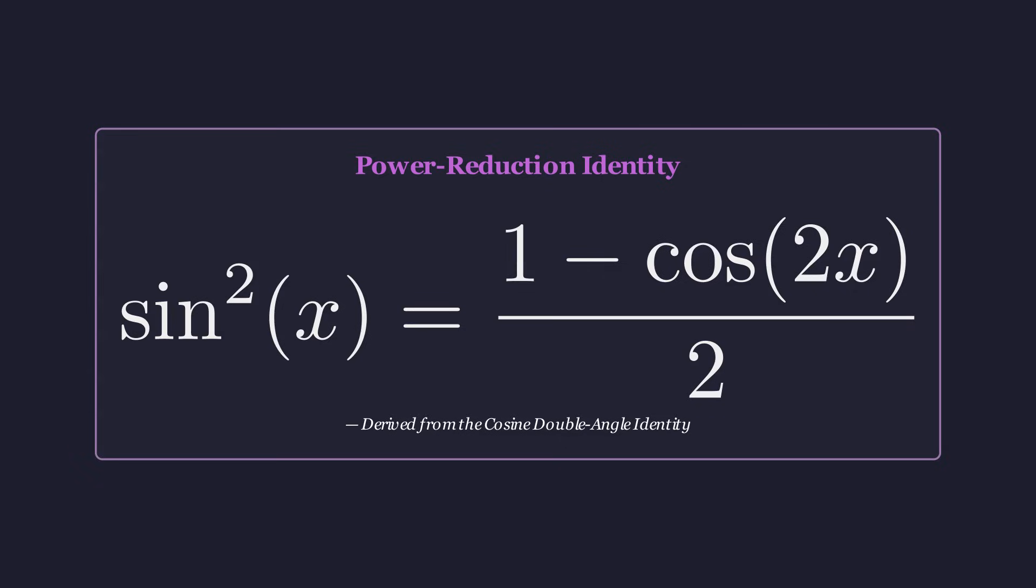The power reduction identity lets us convert a squared trigonometric function into an expression without exponents. Specifically, sine squared of x is equivalent to the quantity 1 minus cosine of 2x, all divided by 2. This identity comes directly from the double-angle formula for cosine.